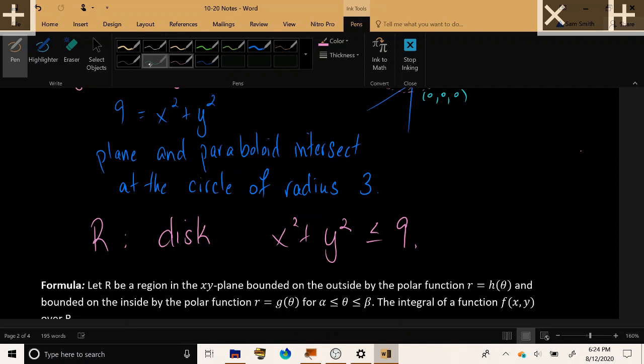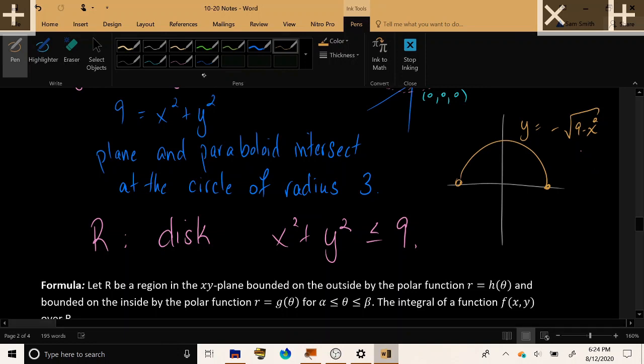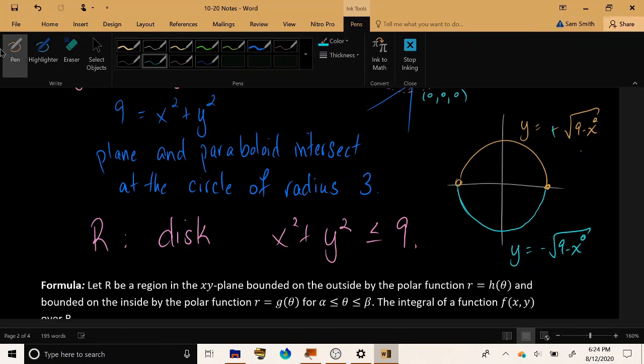The region of integration that I'll need to consider are all the points x, y, so that x and y are contained in this circle of radius 3. r is the disk where x squared plus y squared is less than or equal to 9. But now if I draw this region of integration, we're in this situation of having an upper limit of y equals square root of 9 minus x squared.